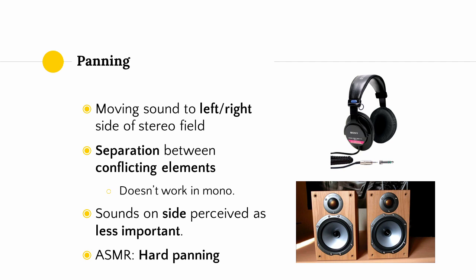Let's talk about panning. If we think about a stereo system — any system with two speakers for the left and right side of our heads — panning is whether something is being played more on the left side of the stereo field or on the right side. And that means that if you're listening on a mono system, you didn't hear the panning.